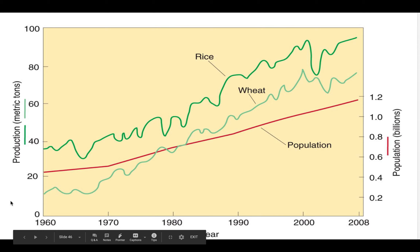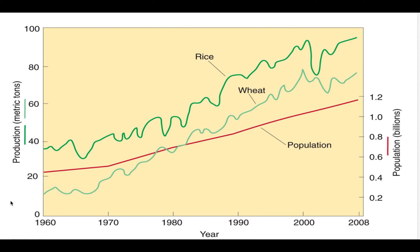Looking at staple crops — rice and wheat, the most commonly consumed globally — the Green Revolution increased production of rice and wheat so that it exceeded population growth during that period. This again serves as a critic's argument against Malthus.